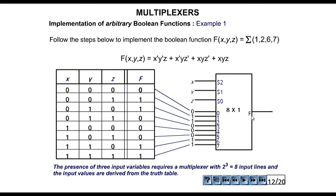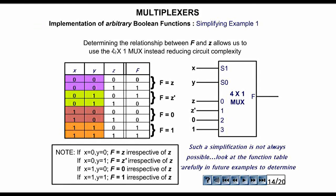Now, if someone asks us to design the same function with a 4-to-1 line multiplexer, how should it be done? For a 4-to-1 line multiplexer we have two selection lines and four input lines. Let's select x and y as the selection lines. We need to find the output F in terms of z. For x y = 0 0: when z = 0, F = 0, and when z = 1, F = 1, so F = z.